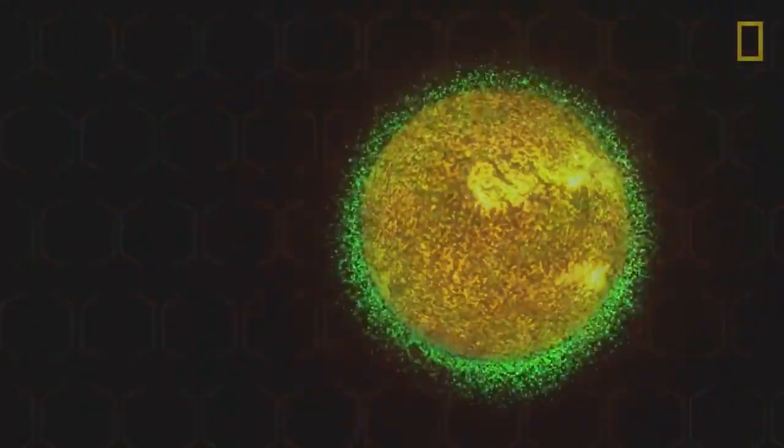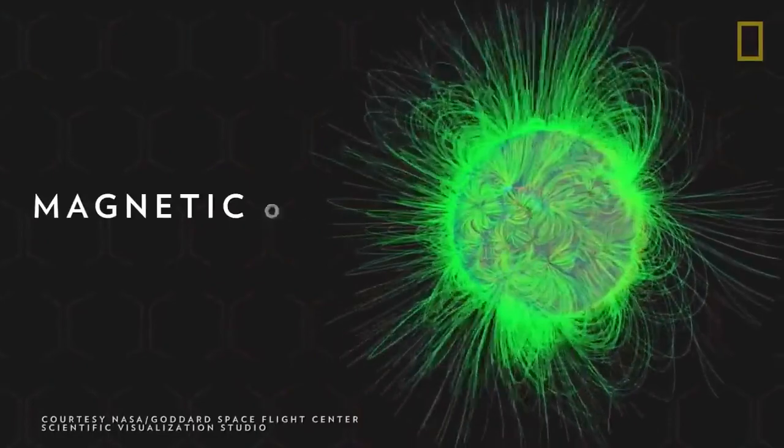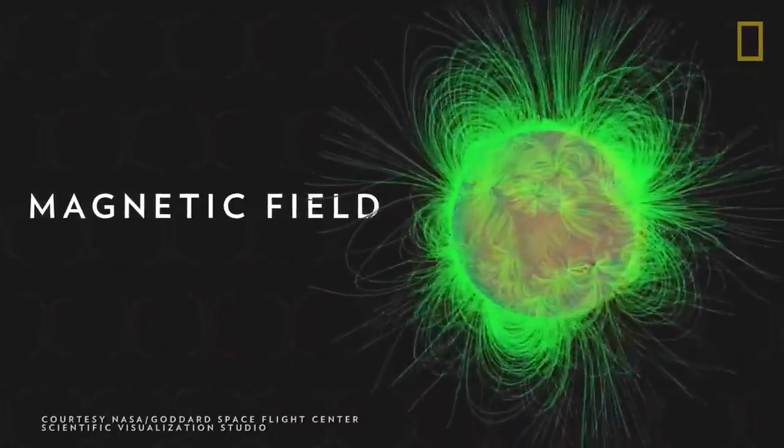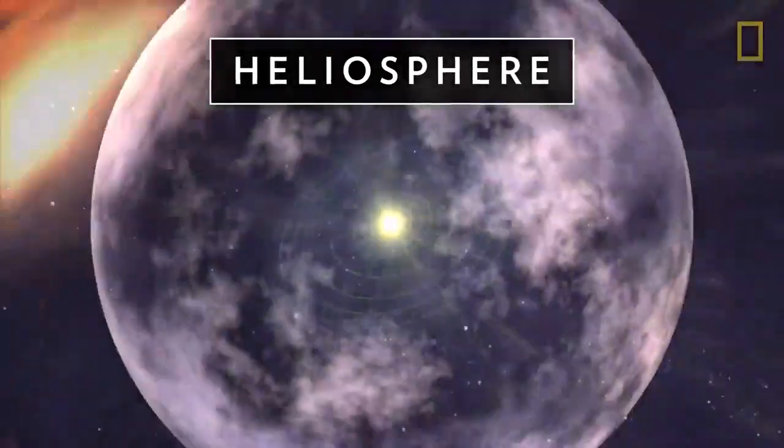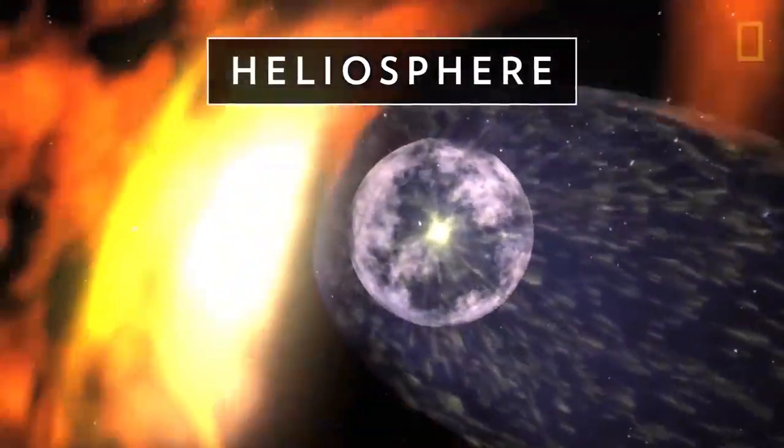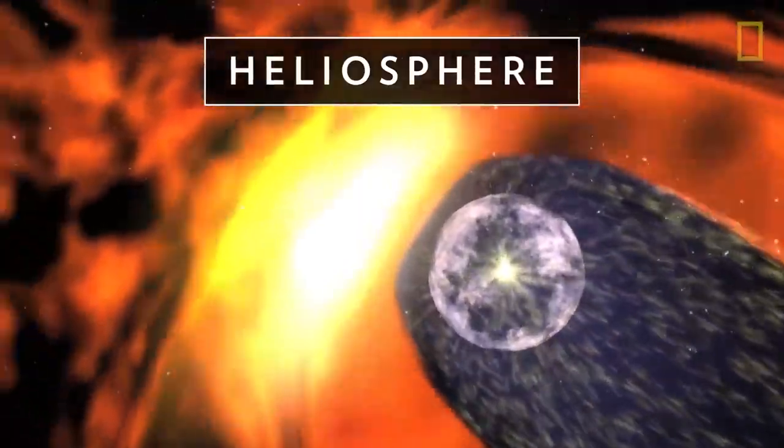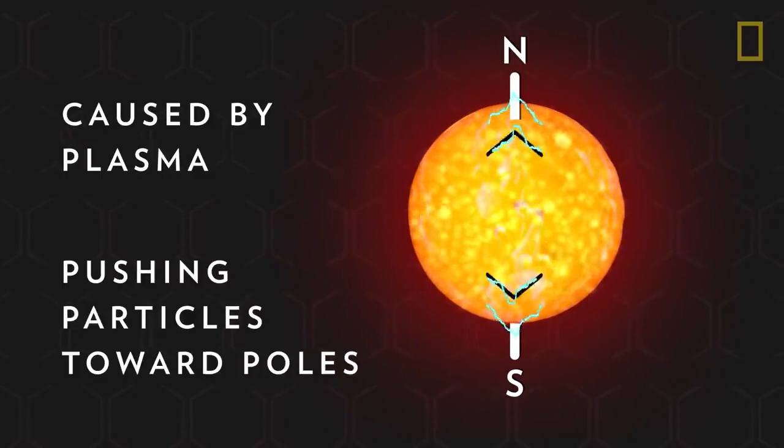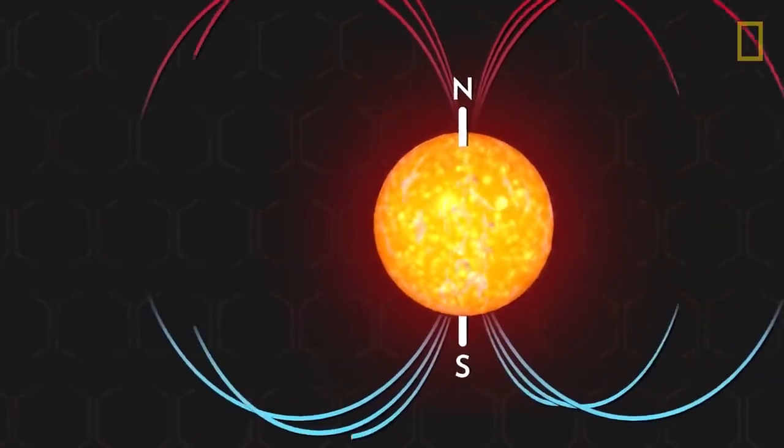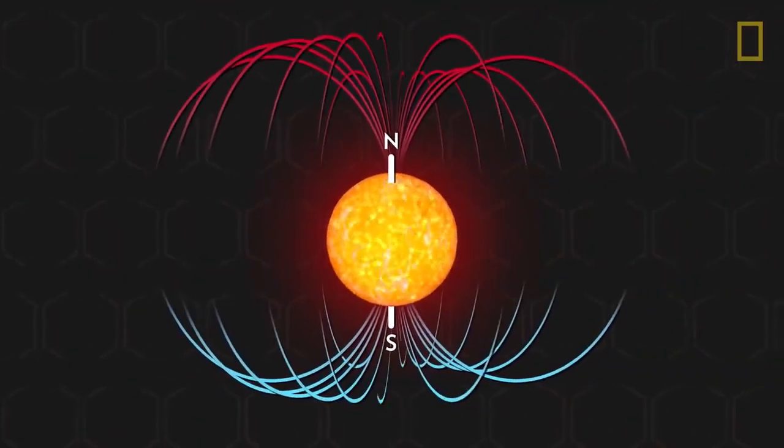Another critical property of the sun is its magnetic field, which encapsulates the entire solar system. Called the heliosphere, this force field protects the planets from harmful cosmic radiation. It's caused by the sun's plasma pushing electrically charged particles toward the star's poles. This process turns the sun into a giant magnet.